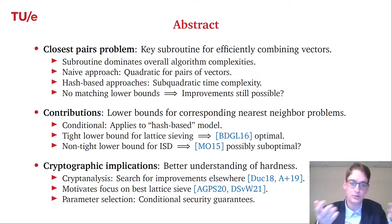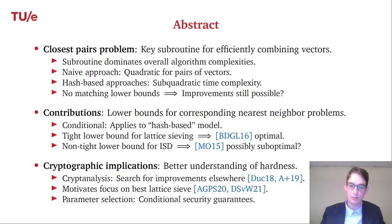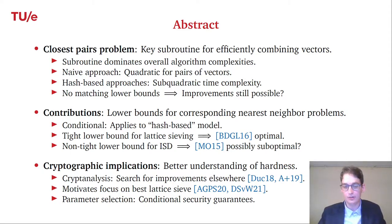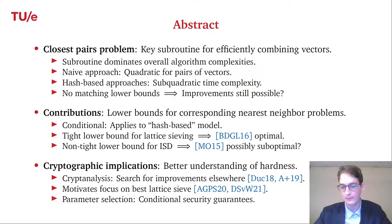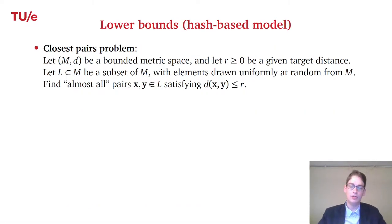If you are designing cryptography and want to choose parameters, our contributions give you a conditional security guarantee: if an attacker is trying to solve the underlying lattice problem by running lattice sieving with a hash-based nearest neighbor technique, they are not going to do better than what has been known since 2016. The attacker would really have to improve some other part of the algorithm to break your scheme.